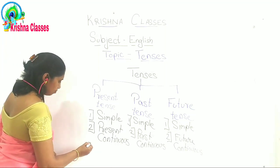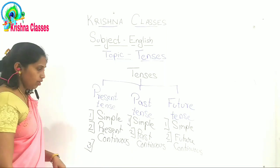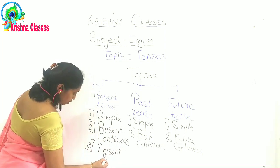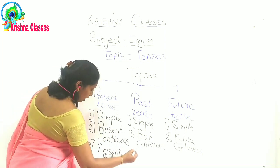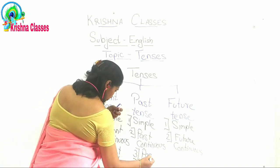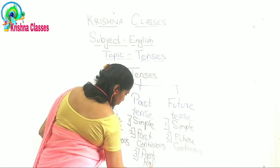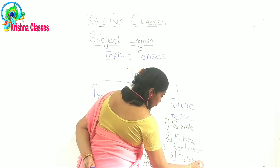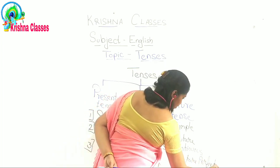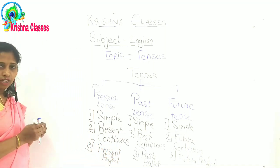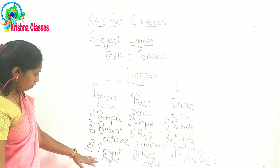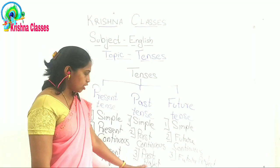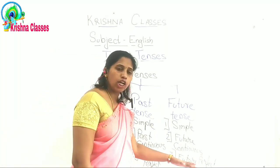The third type is present perfect tense, past perfect tense, and future perfect tense. The fourth type is present perfect continuous tense, past perfect continuous tense, and future perfect continuous tense.